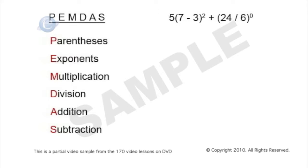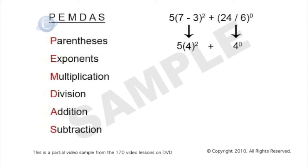Let's do what we have inside our parentheses first. Our first parentheses is 7 minus 3, so 7 minus 3 is 4, and we end up with 5 times 4 squared. Our second parentheses is 24 divided by 6. 24 divided by 6 is also 4, so we're left with 5 times 4 squared, plus 4 raised to the 0 power.